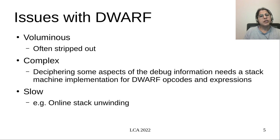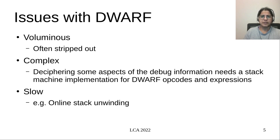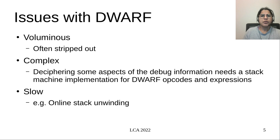But there are some issues with Dwarf. It is large — in practice it is voluminous enough that most of the time it is stripped out, shipped as a distinct package, or not shipped at all. It is complex: interpreting some aspects of Dwarf requires implementing a small stack machine where Dwarf opcodes need to be executed and Dwarf expressions evaluated. It is also slow, and for the specific use case of online debugging, Dwarf-based methods are not the first choice.